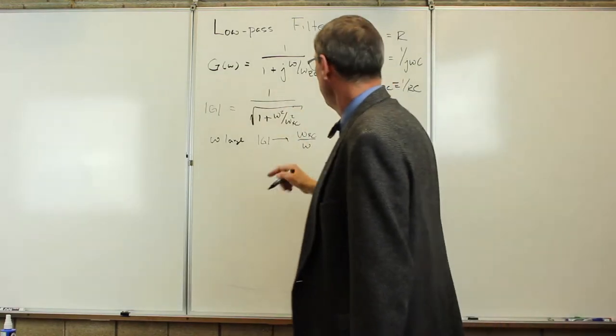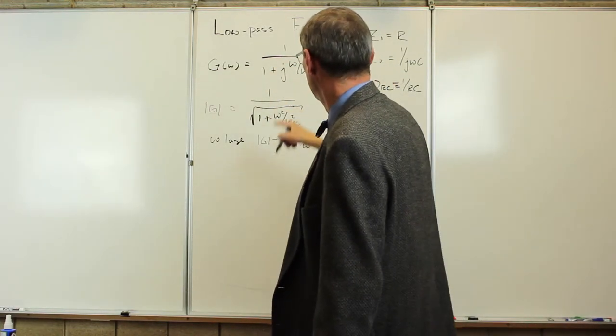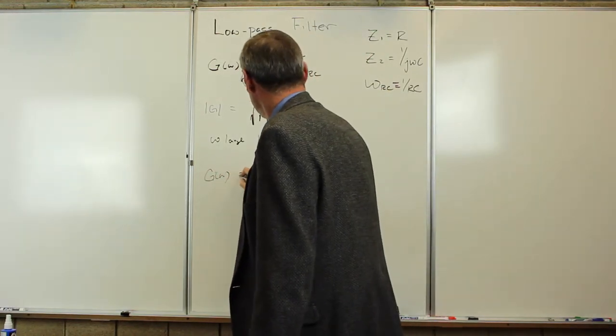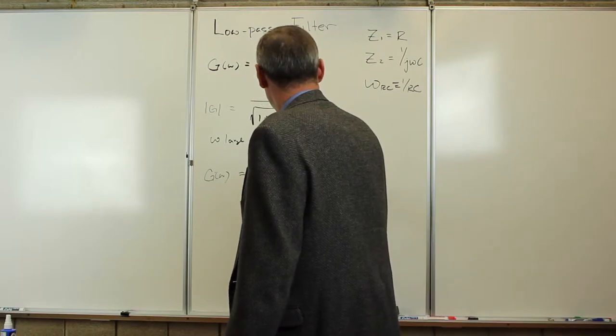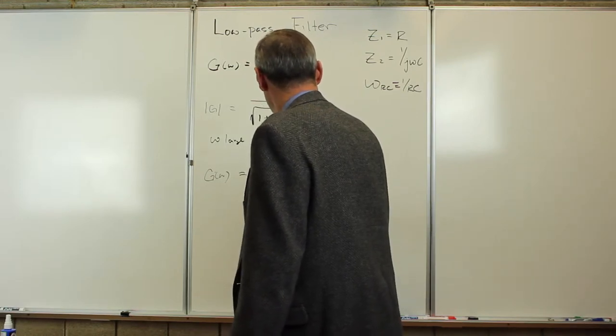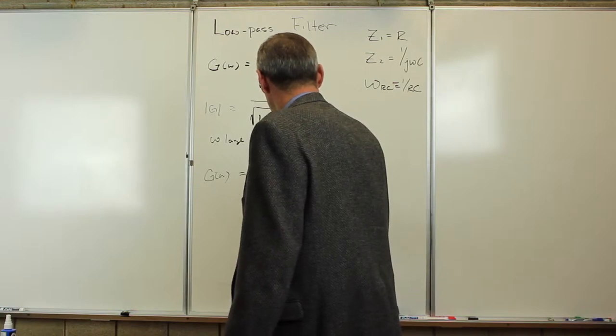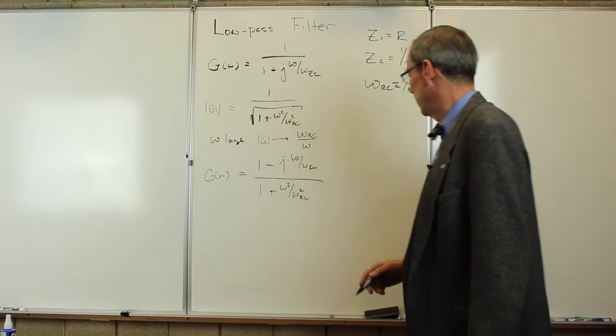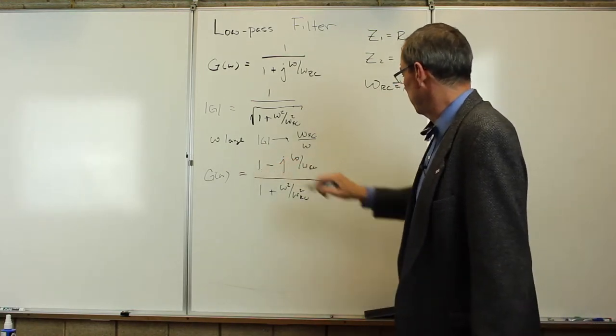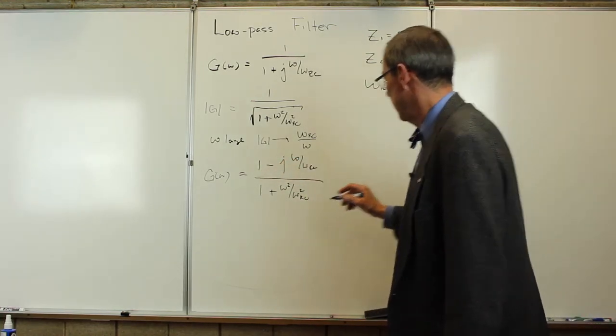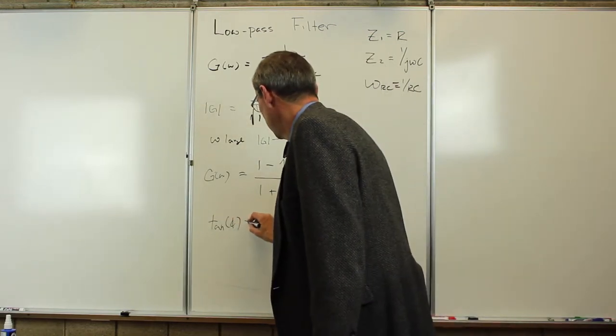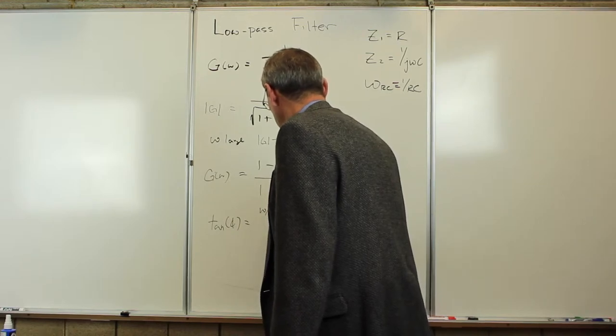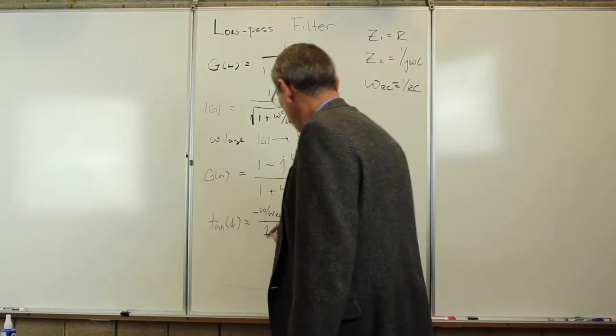The phase, we can do by turning this into a proper complex number. So gain of omega, it's going to be 1 minus j omega over omega RC over 1 plus omega squared over omega RC squared. We just multiply by the complex conjugate. Here's the real part, there's the imaginary part. The tangent of the phase is going to be the imaginary part, omega over omega RC with a minus sign divided by 1.